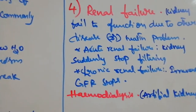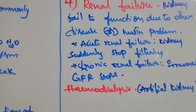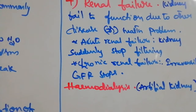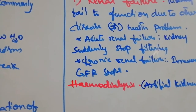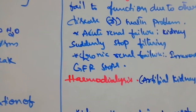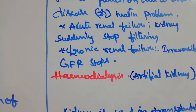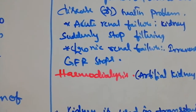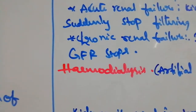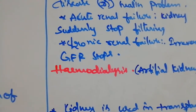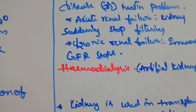Hemodialysis is used for renal failure — kidney failure. Due to other diseases or health problems, kidney failure or renal failure can occur. There are two types: acute and chronic. In acute renal failure, the kidney suddenly stops filtration — it is irreversible failure.